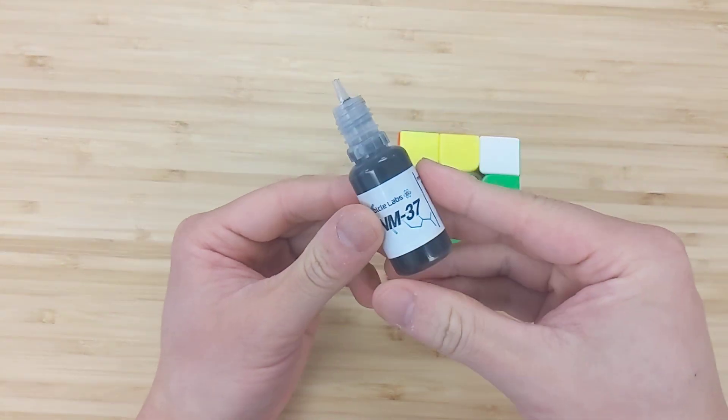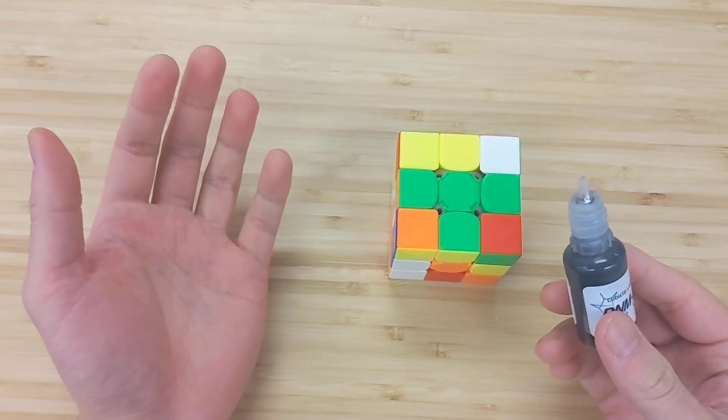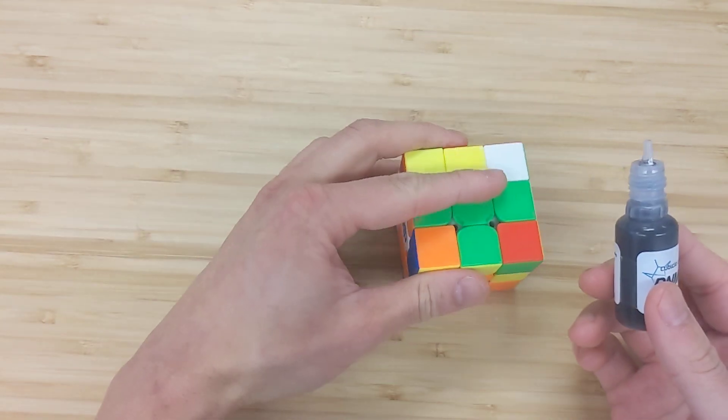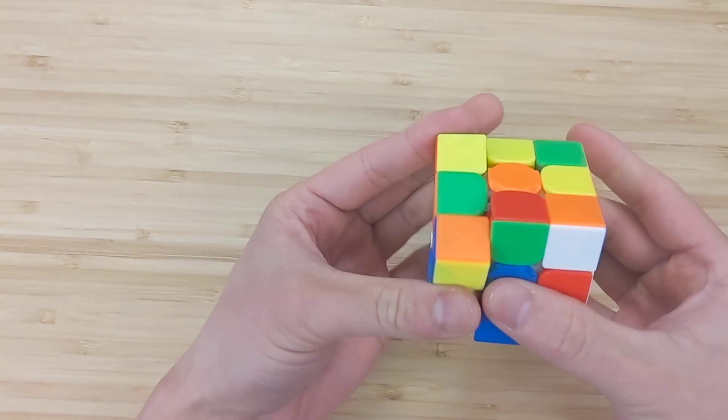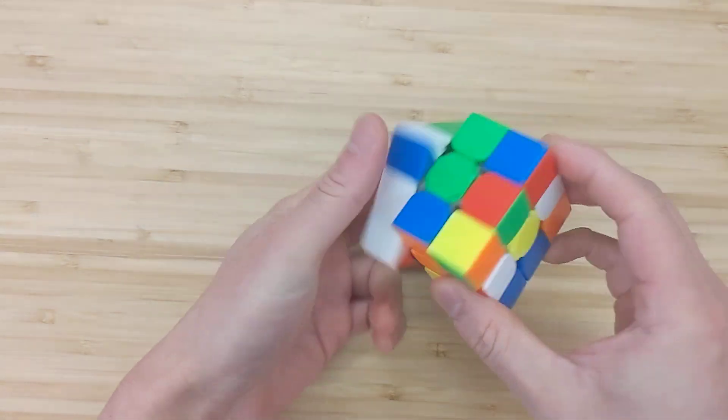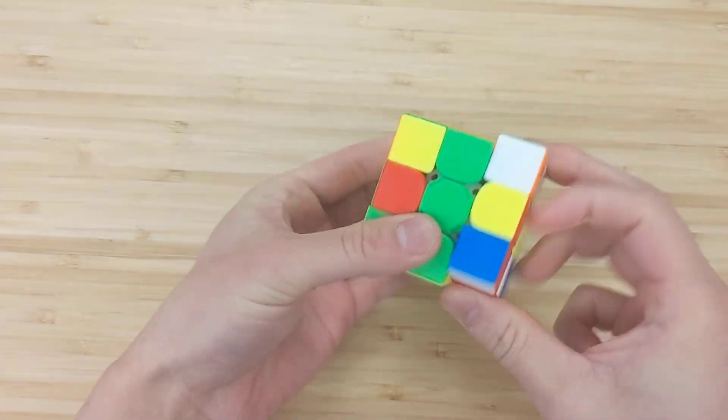Again, you have to be careful with water-based lube when you lube smart cubes, because if too much, then it's not good for the cube. But you can totally apply one drop and immediately break it in on the pieces. That's completely fine. No problems.